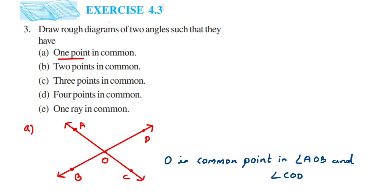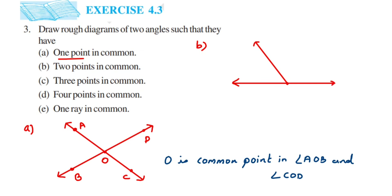Next, the question is asking for two points in common. I am going to use a similar figure. You can draw the same diagram but with different angles, or draw it like this: a straight line with two angles side by side. Suppose this is point A, point B, point C, and the intersection point O. The two angles are AOB and BOC.